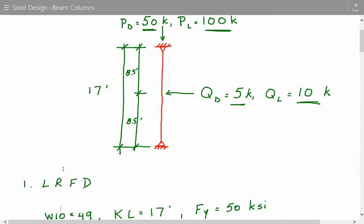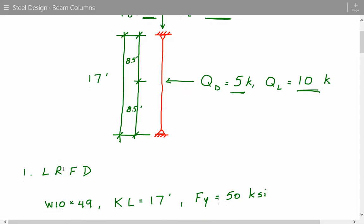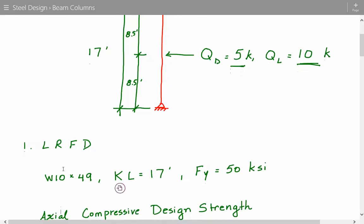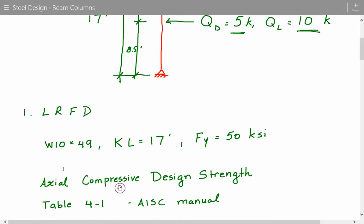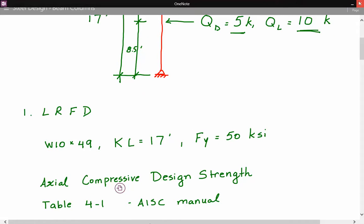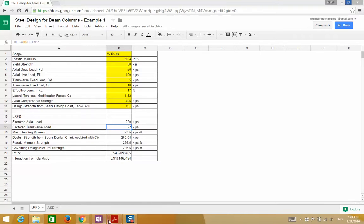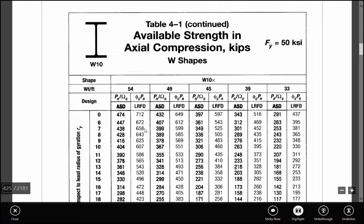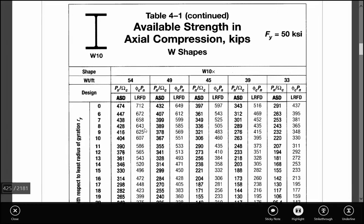So first we'll take on LRFD and we know that this is a W10x49 shape. The effective length is 17 feet and the yield stress is 50 ksi. So we can get the axial compressive strength of this member by using table 4-1 in the AISC manual. So here's table 4-1 and based on 17 feet, we can see that the axial compressive strength for LRFD is 405 kips.